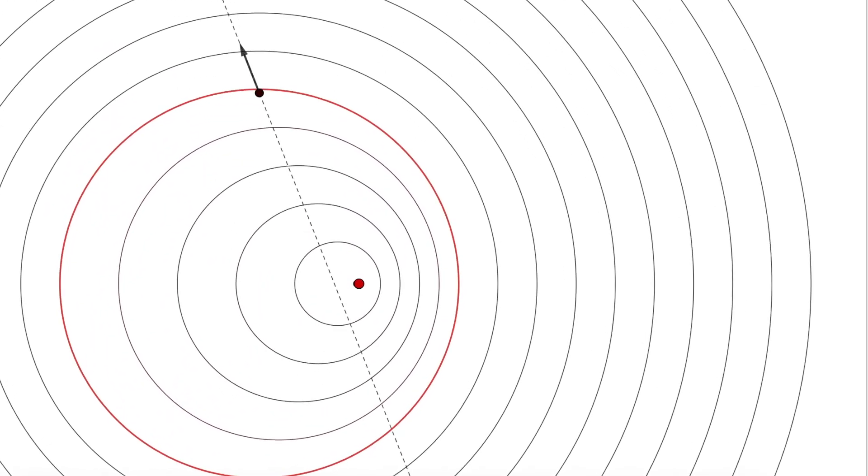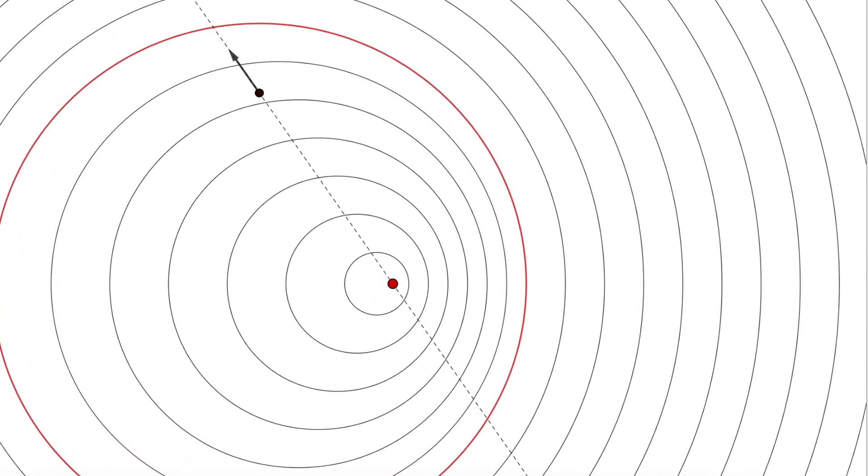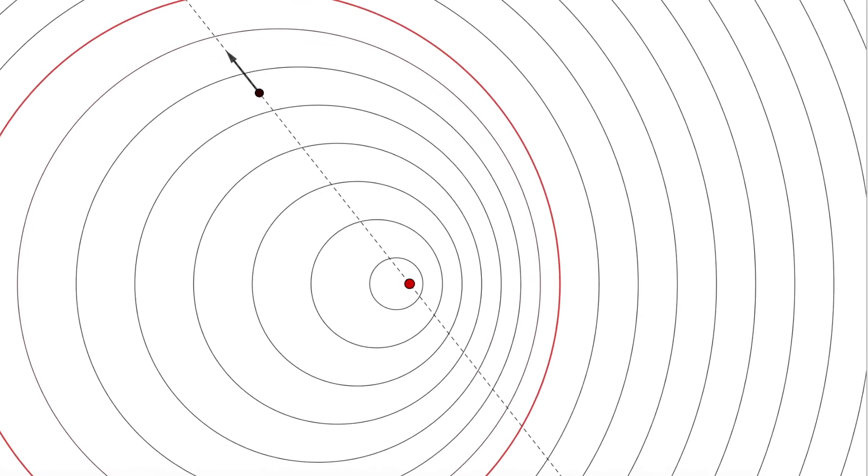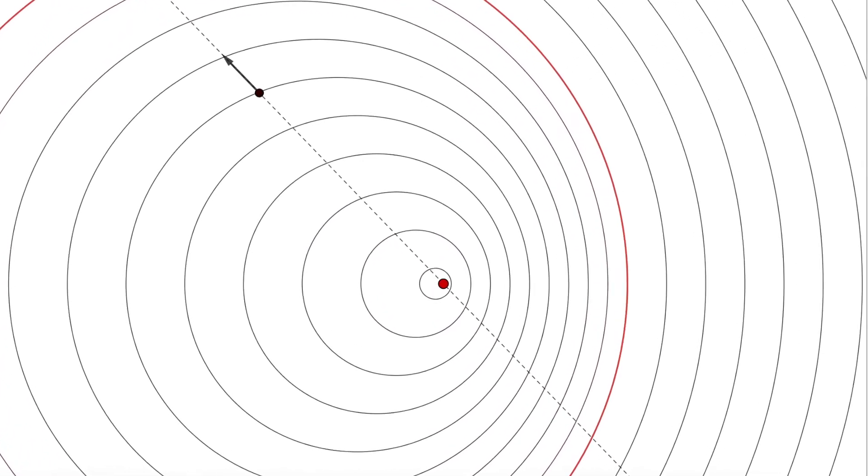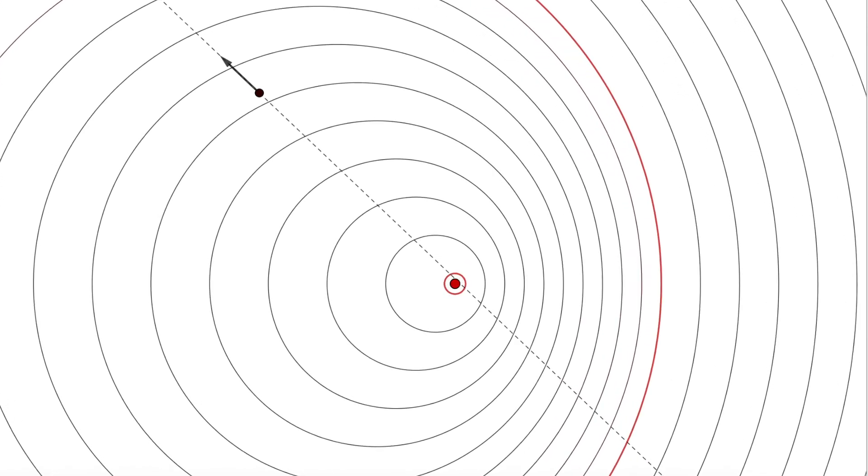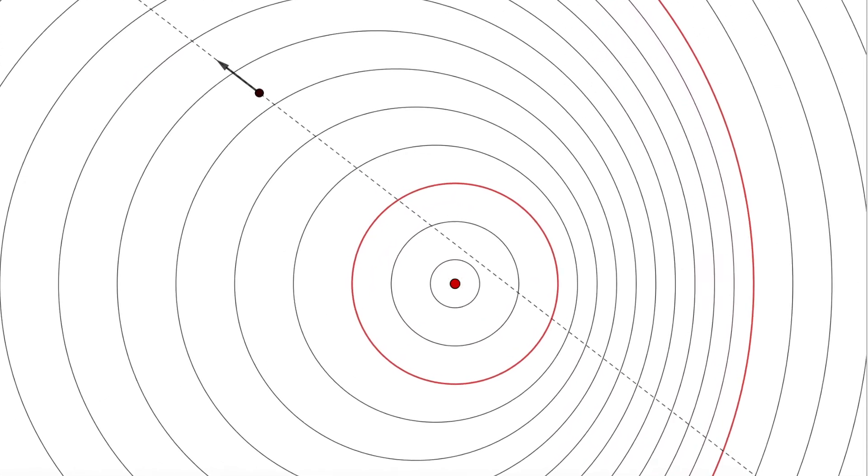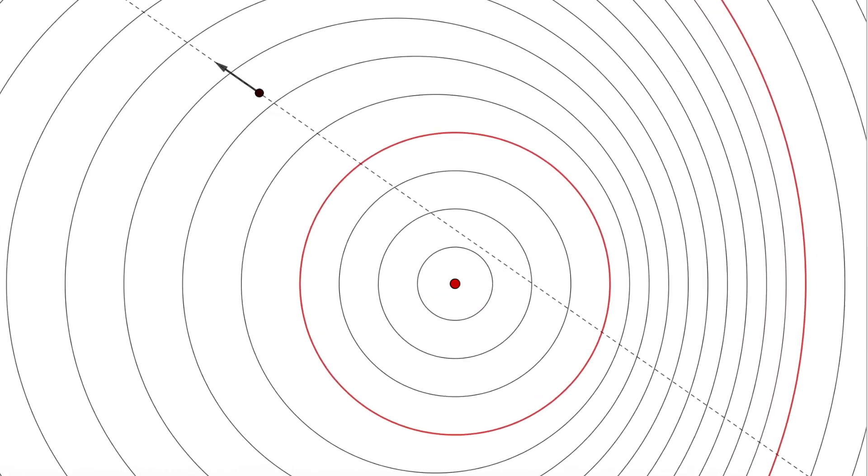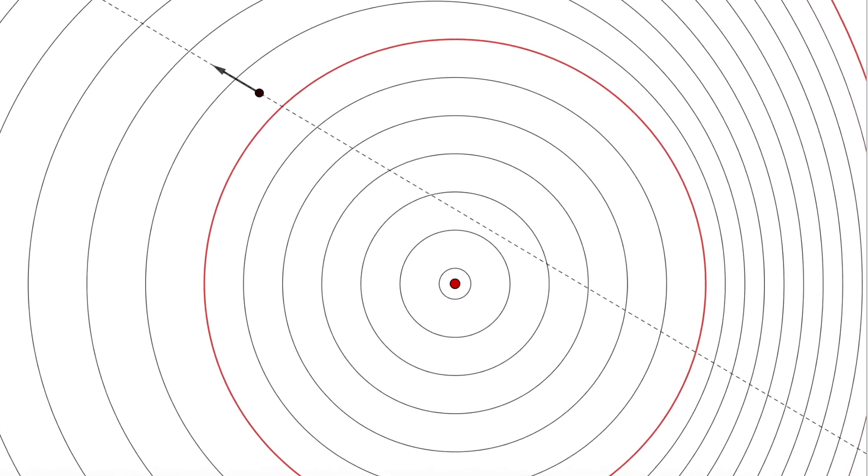When the red ring carrying the information about the acceleration arrives, the field quickly shifts to the direction of the charge. And it stays here until the point where the charge is decelerated again. As we see, the dotted line continues until the information about the deceleration arrives and then quickly shifts back to the real position of the charge.